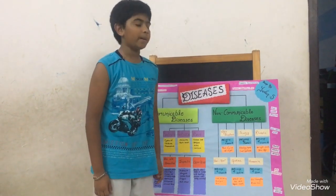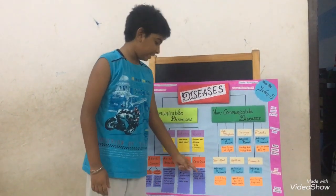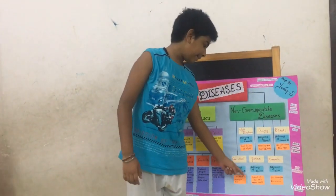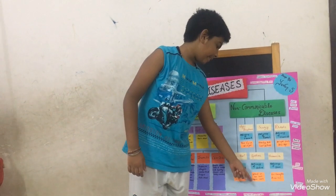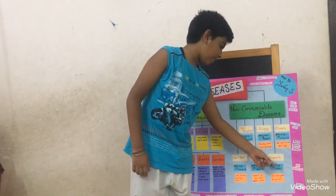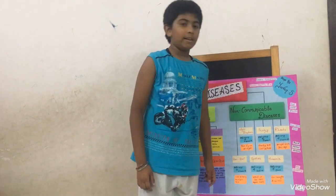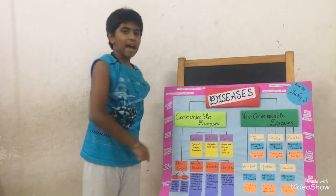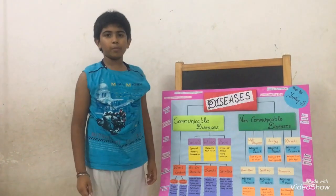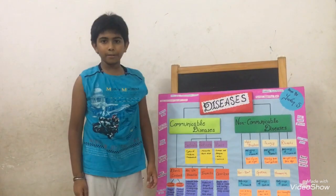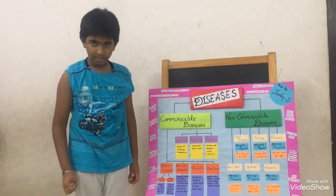Beriberi — deficiency of vitamin B1. Goiter — deficiency of iodine leads to the gland in the neck region swelling. Anemia — deficiency of iron, low hemoglobin. Here at the borders I wrote how to prevent diseases — communicable disease.